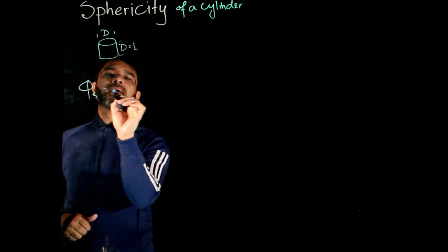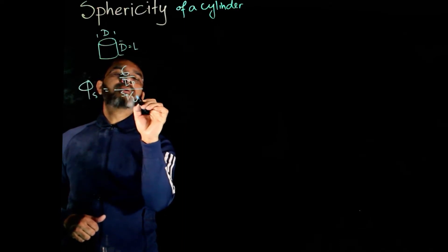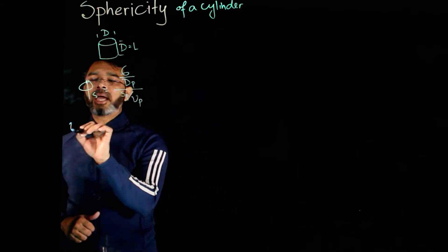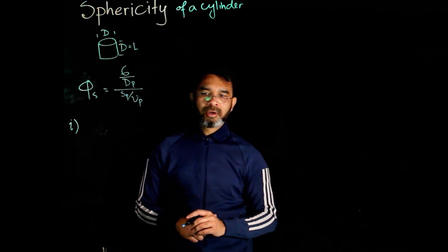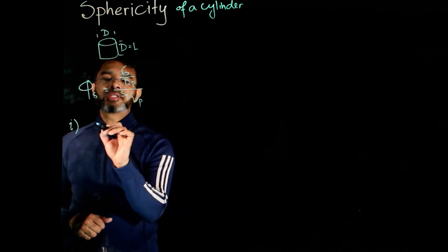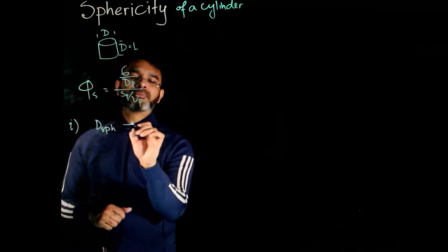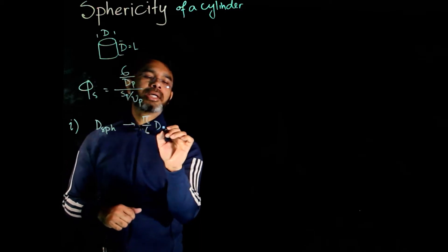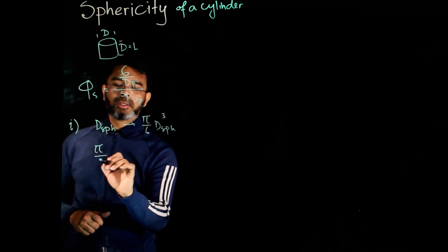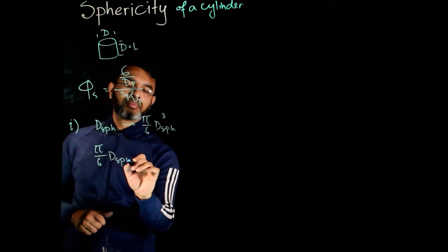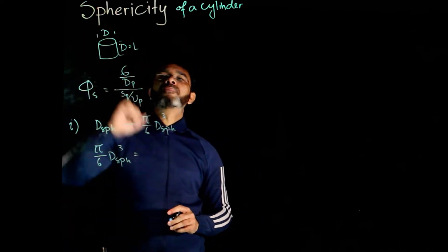We define the sphericity as 6 over dp, sp over dp. We can define the equivalent diameter as the diameter of a sphere having the same volume. So, if the diameter of the sphere is dsph, its volume is pi over 6 dsph cube. This equals the volume of the particle.